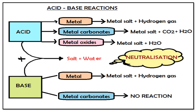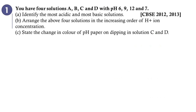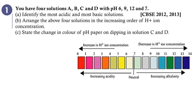First question: you have four solutions A, B, C, and D with pH 6, 9, 12, and 7. Identify the most acidic and most basic solutions, arrange the four solutions in increasing order of H⁺ ion concentration, and state the change in color of pH paper on dipping in solutions C and D. pH is a universal indicator giving values from 0 to 14. Values 0 to 7 indicate acids, 7 to 14 indicate bases, and 7 is neutral.